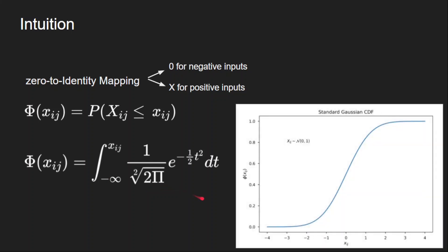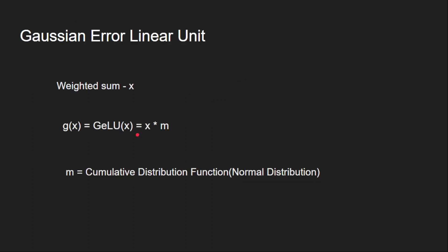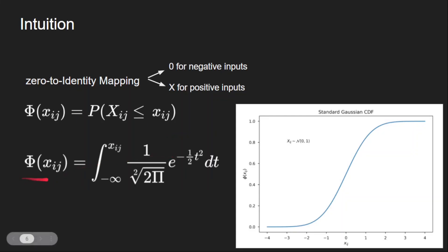Visually, as x becomes larger the probability of preserving it increases. You can think of Φ(x) as the value being multiplied with the input to give the output of the activation function. In GELU the activation is x times m, so Φ(x) acts as that m value being multiplied by the input.